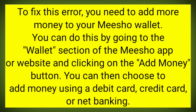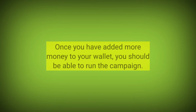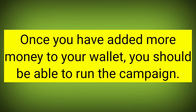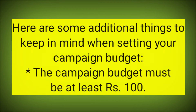You can do this by going to the wallet section of the MeShow app or website and clicking on the 'Add Money' button. You can then choose to add money using a debit card, credit card, or net banking. Once you have added more money to your wallet, you should be able to run the campaign.